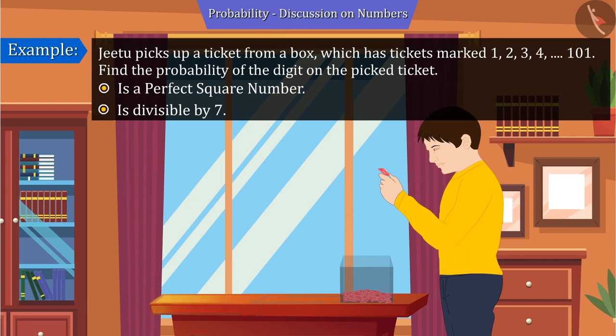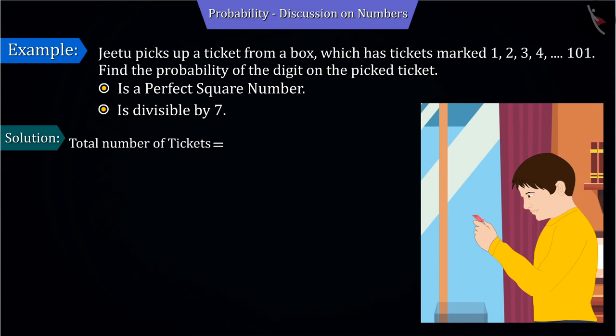Let's see. Given that there are a total of 101 tickets in the box, there are a total of 101 outcomes. So, the number of total possible outcomes is 101.